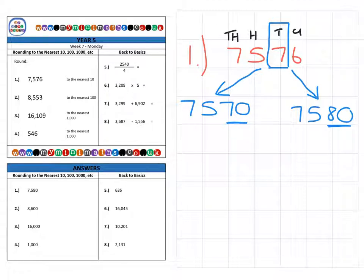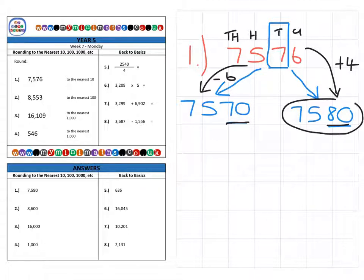And we need to decide which one is it closest to. Is it closest to 7,570 or 7,580? Now, as we can see, the six is four away from making it 7,580. And if we have to take six off to take it down to 7,570, therefore, it's closest to 7,580.